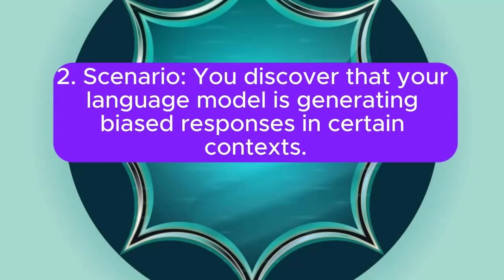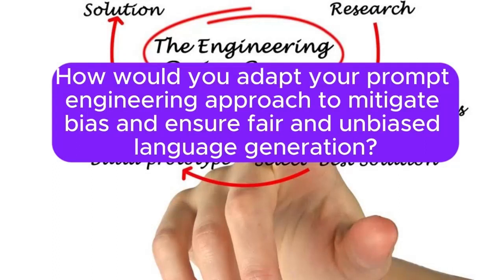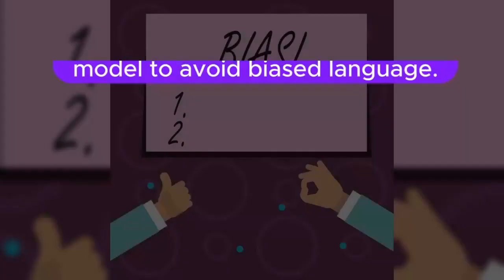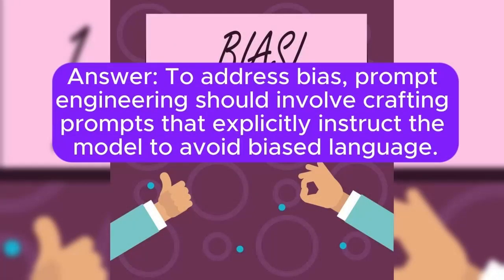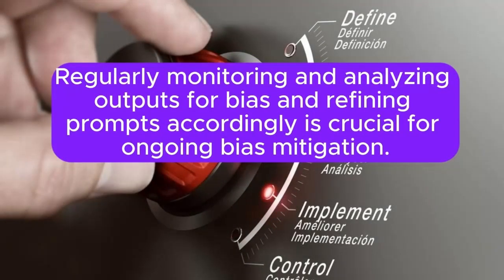Scenario 2: You discover that your language model is generating biased responses in certain contexts. How would you adapt your prompt engineering approach to mitigate bias and ensure fair and unbiased language generation? Answer: To address bias, prompt engineering should involve crafting prompts that explicitly instruct the model to avoid biased language. Incorporating diverse examples and scenarios into prompts can help the model learn a more balanced perspective. Regularly monitoring and analyzing outputs for bias and refining prompts accordingly is crucial for ongoing bias mitigation.